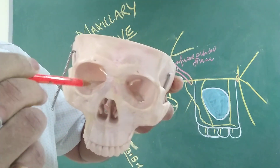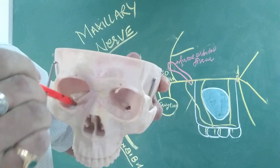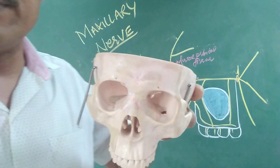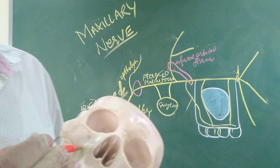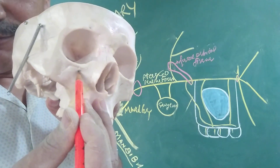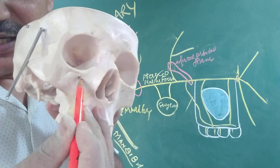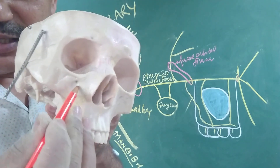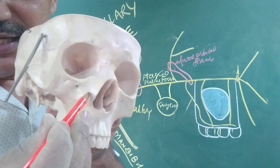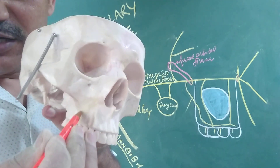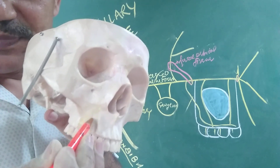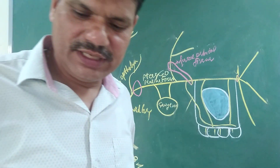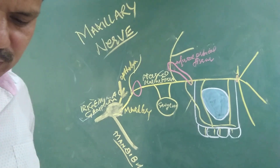While passing through the infraorbital groove, the nerve is known as the infraorbital nerve. When it passes through the infraorbital foramen, it gives three branches: one is palpebral to the eyelid, another one is labial to the upper lip, and another one is nasal to the external nose.